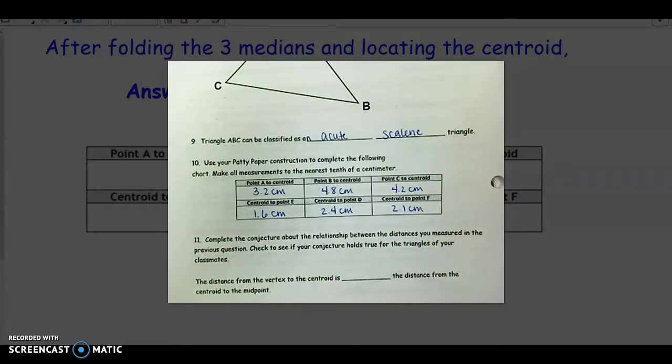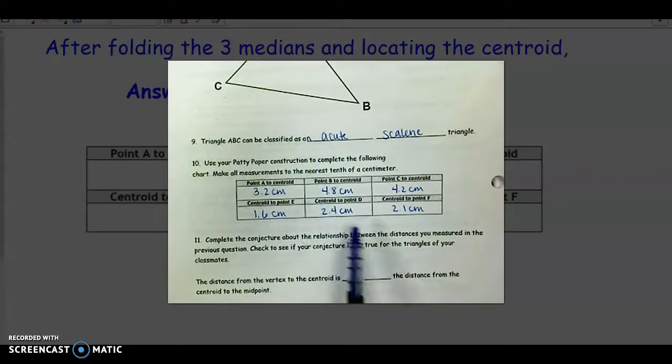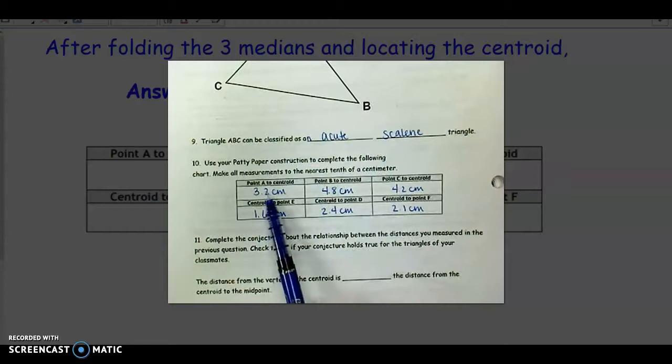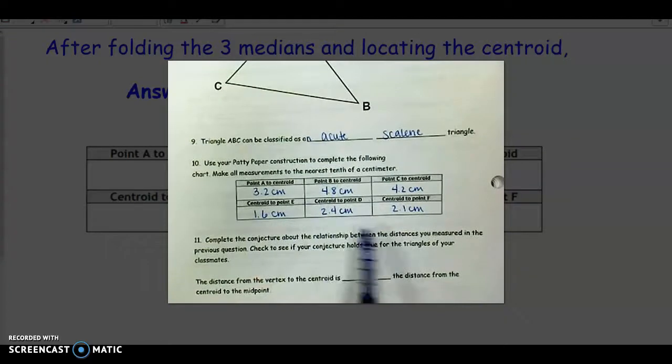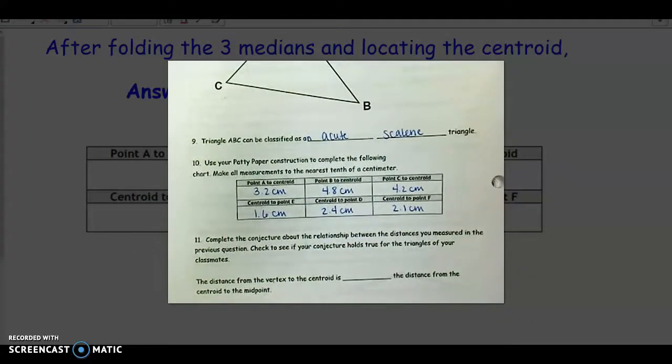And so I hope that you can see that all of these are half as much as these amounts, or in other words, these amounts are twice as much as this. And so we want to be able to write that into a conjecture.